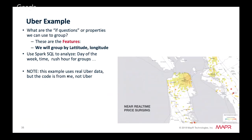Features are properties you use for your machine learning model. Here we'll group by latitude and longitude as our features. After determining the cluster centers we'll use Spark SQL to analyze by day of the week, time, and similar attributes. This is real Uber data but not real Uber code — real Uber does more complex things like real-time price searching.